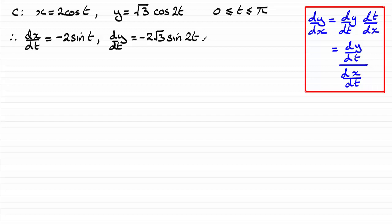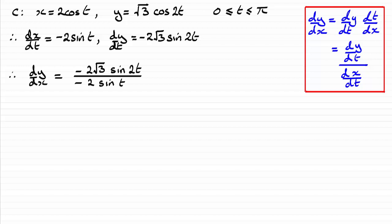We now need to get dy by dx. I'm going to use the division version: dy by dt over dx by dt, so this result divided by that one. If you do that, you're going to get this result. The negative 2's cancel one another out, so I'm going to cancel those out.